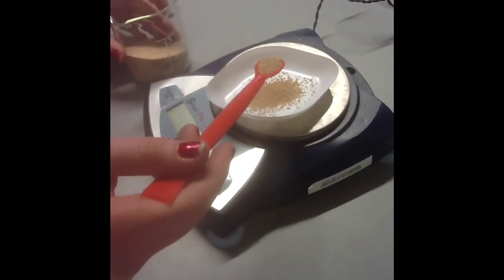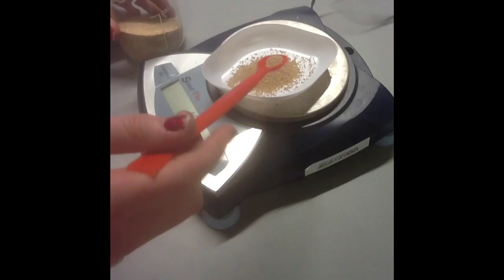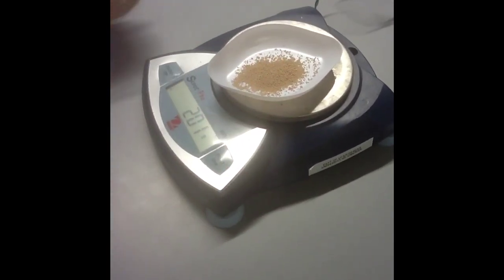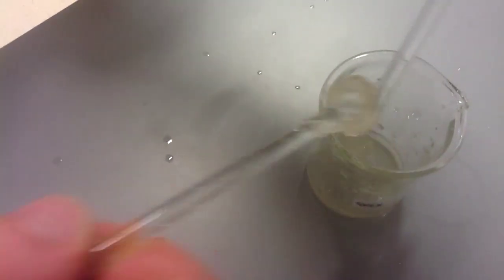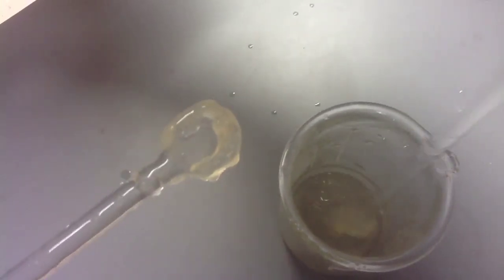The next step is to weigh out 2 grams of yeast. Add the yeast to 10ml of distilled water in a 100ml beaker. Make sure to stir well, as sometimes the mixture may appear a bit clumpy. Like so. Make sure you keep mixing until the solution turns smooth.